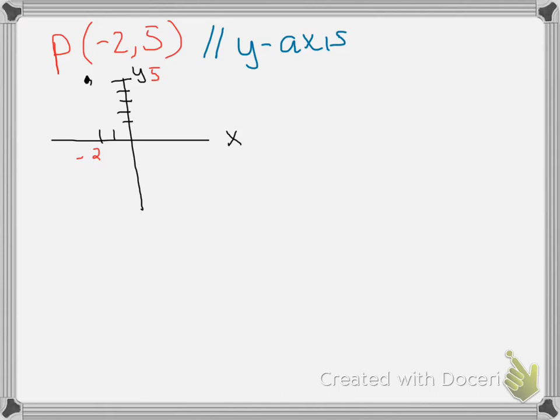All right, we're going to write an equation in slope-intercept form that is parallel to the y-axis. So I put parallel to the y-axis, we have a little note here, and goes through the point negative 2, five.